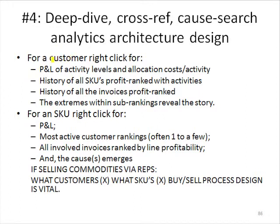If we were looking, for example, at a super profitable or unprofitable customer, we could right-click, and first of all, we could do a P&L of the customer and look at the activity levels and allocation costs for those activities and see if anything looks like it's way amiss. And what are the outstanding drivers of what really makes this customer so extreme?